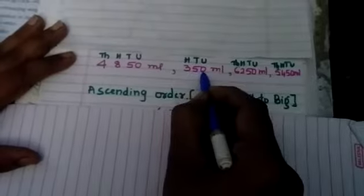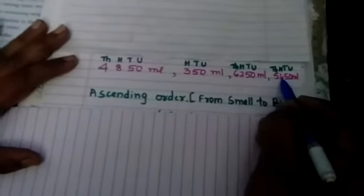It is four, this one three. One, two, three here. One, two, three, four. One, two, three, four. So which number is having less digits? This number is having less digits, so this one will come first because it's a smaller one. 350 milliliters.